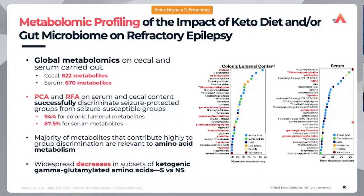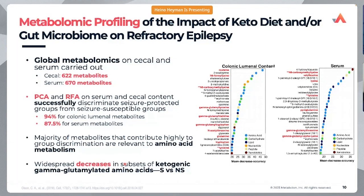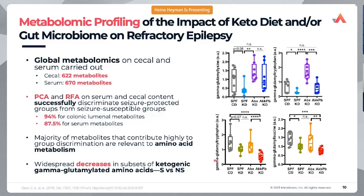The random forest analysis showed that several different types of metabolites were quite crucial in developing the predictive model. Both in the colonic luminal content and in serum content, the gamma-glutamyl amino acids started to show their true colors — they were quite interestingly up-regulated in the non-seizure-protected group. These widespread decreases in ketogenic and gamma-glutamyl amino acids were the driving force behind seizure susceptible versus non-susceptible separation.